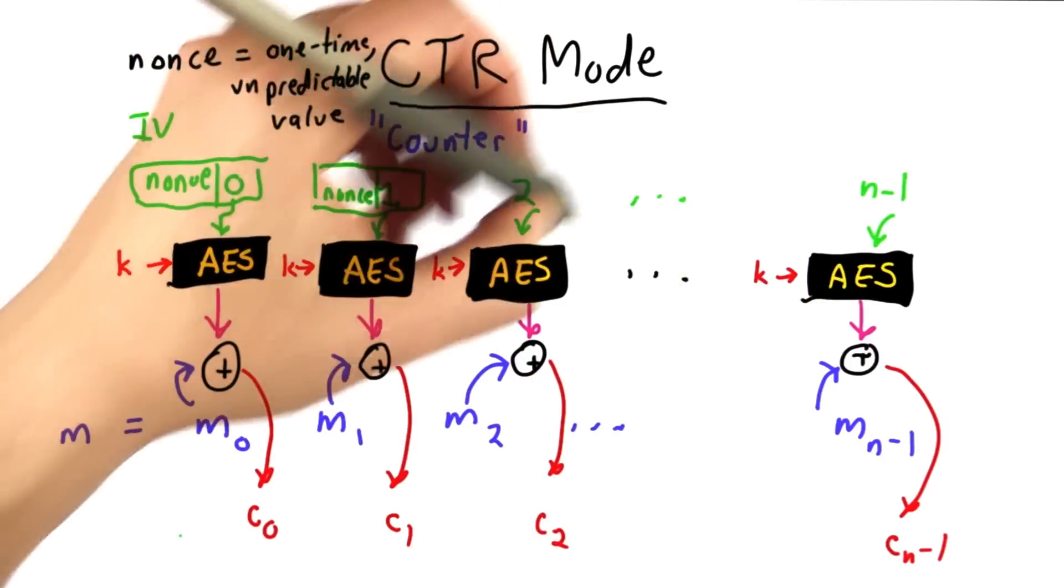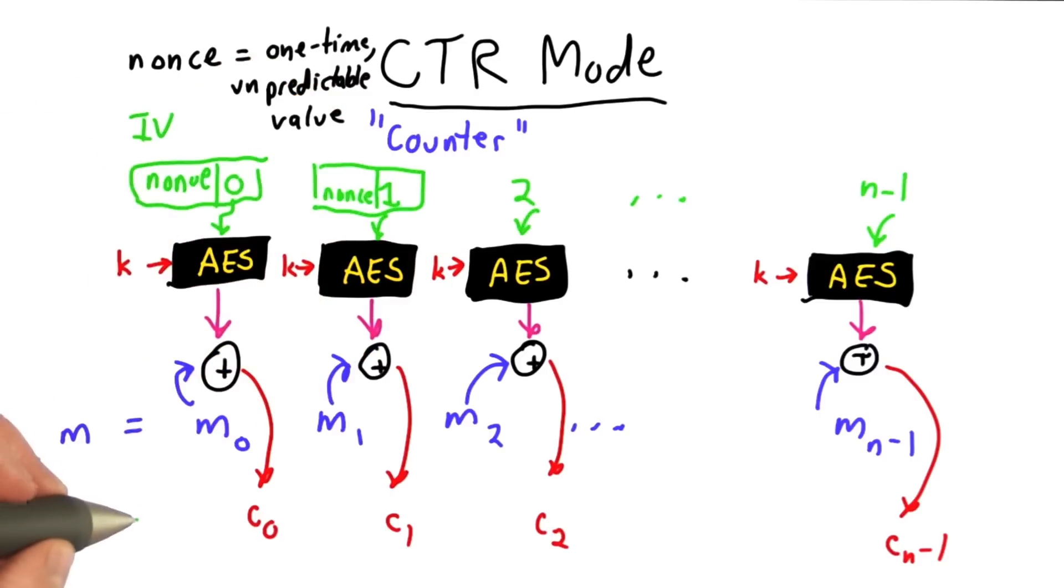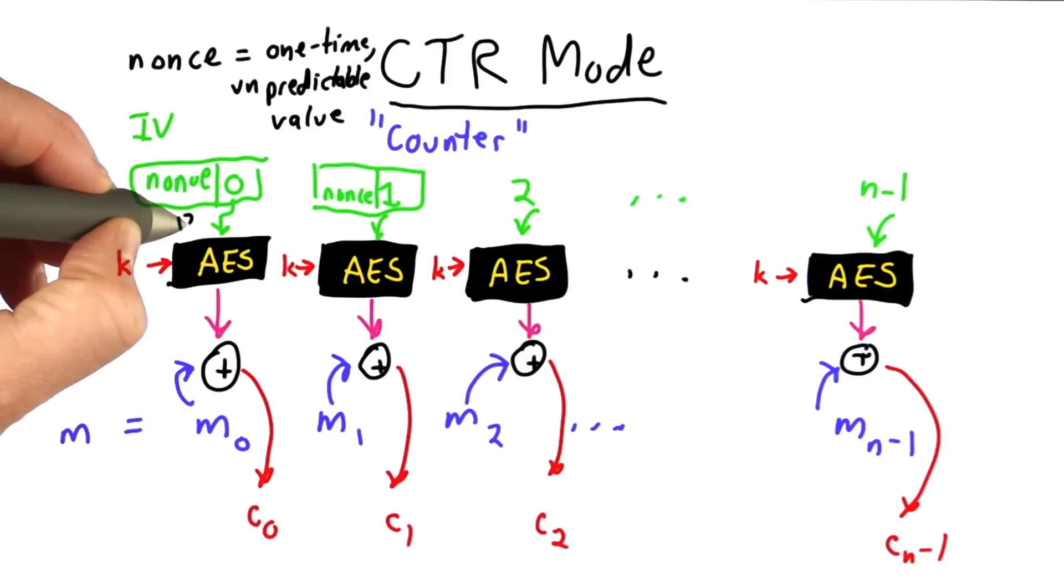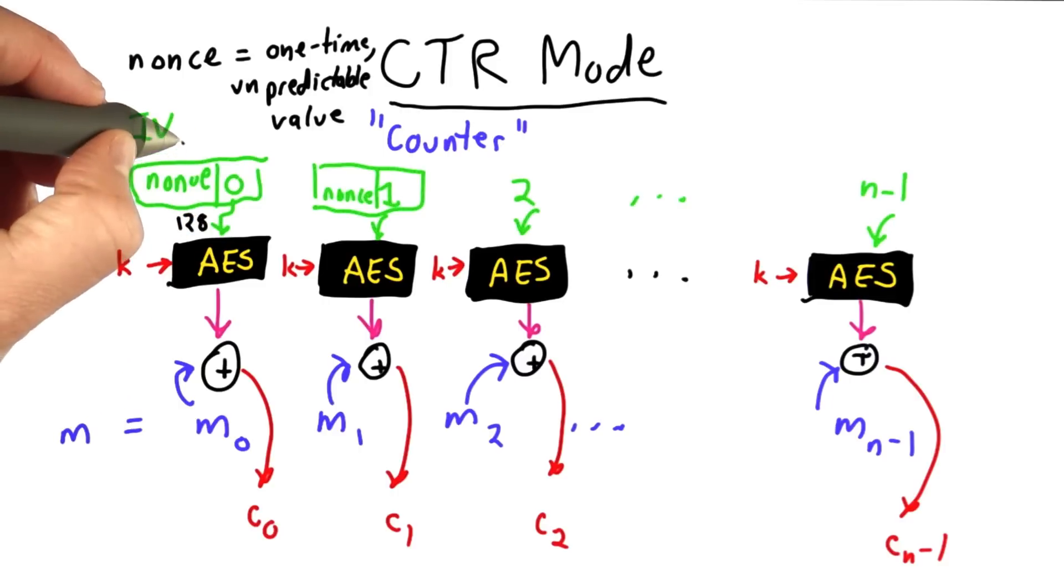The point of the nonce is to make sure every time we use counter mode with the same key, we get different blocks out. As an example with AES, if we have 128 bits as the block size, we might have a 64-bit nonce and a 64-bit counter.